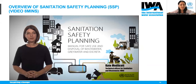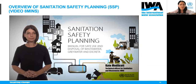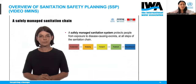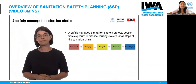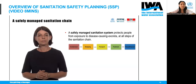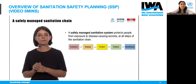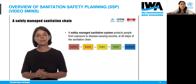I'm Kate Medlicott, Technical Officer for Sanitation and Wastewater at the World Health Organization. In this video I'll give you an overview of sanitation safety planning with an example. Sanitation safety planning — SSP — is a risk-based management tool for sanitation systems. A safely managed sanitation system prevents exposure to disease-causing excreta at all steps of the sanitation chain, from containment, through emptying, transport, treatment, and to disposal or reuse. It can be used together with excreta flow diagrams, or SFDs, to make sure that excreta reach safe rather than unsafe endpoints.